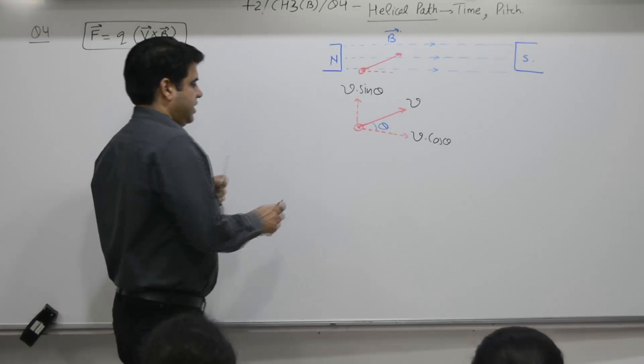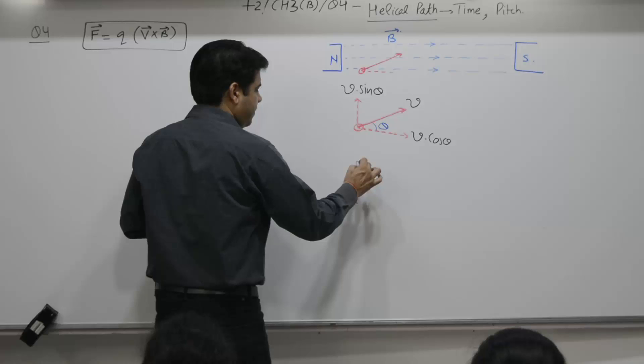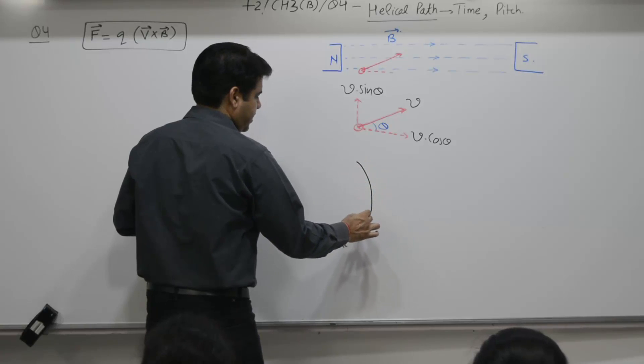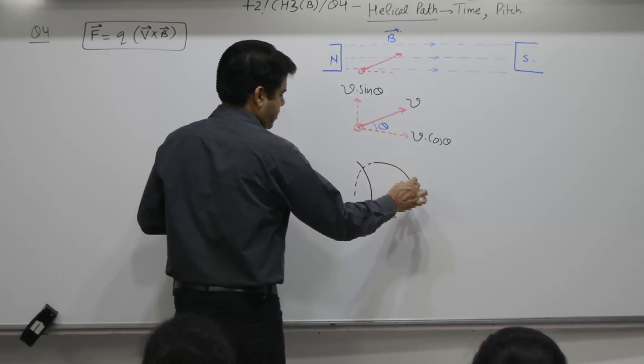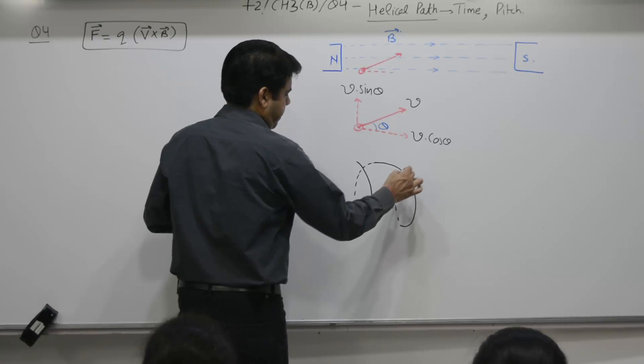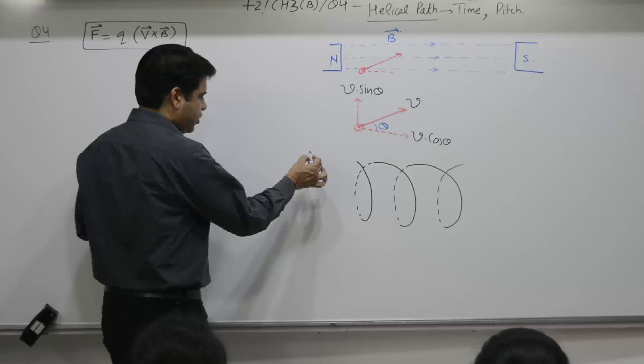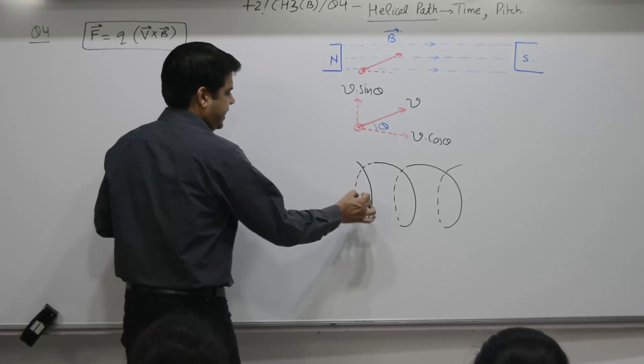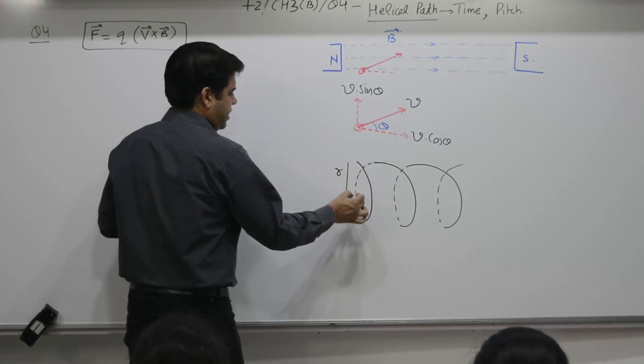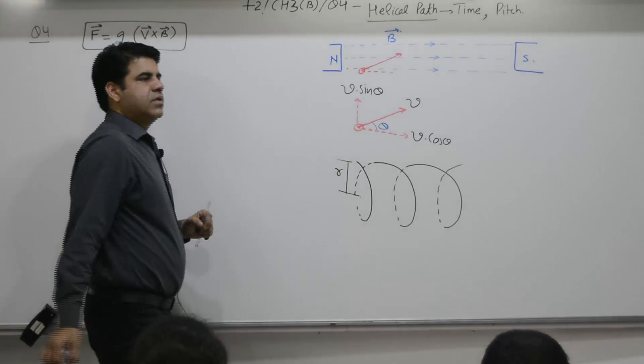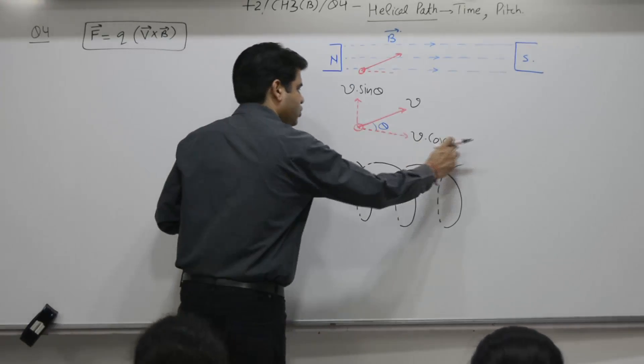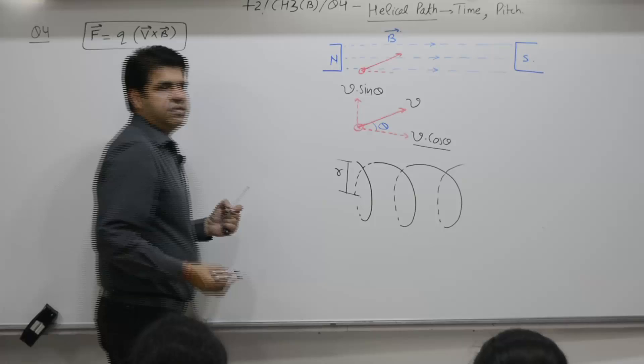That means, if you have to analyze any of the vertical component, you will have to think of this circle. Of what radius? R. If you have to take into account any horizontal parameter, then you will take into account v cos theta.